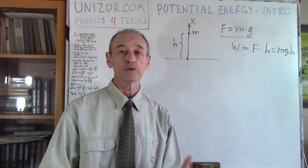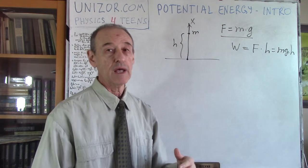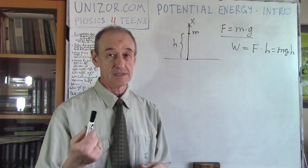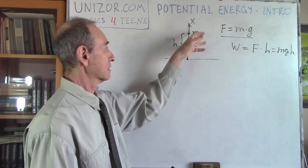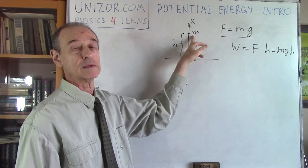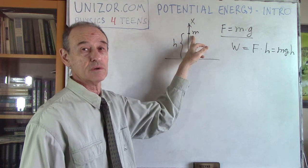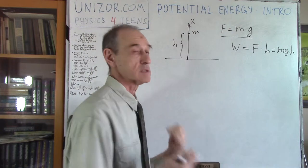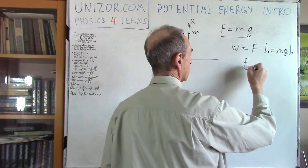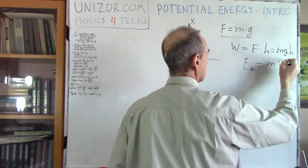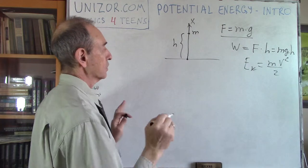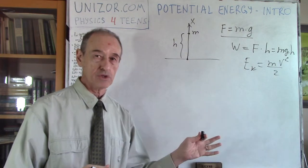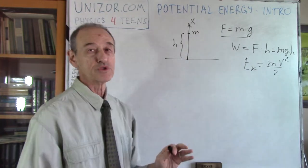Now let's think about what happens as the object falls down — how its potential energy is changing and what else is changing. Obviously, its kinetic energy is changing because it has a speed. Speed in the beginning is zero, so kinetic energy in the beginning is zero. But as it falls down, kinetic energy will grow because its speed grows. Kinetic energy by definition is mv²/2. So we will examine how potential energy and kinetic energy are changing as the object falls down.